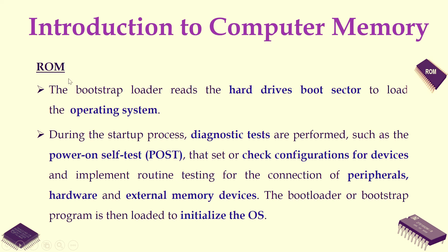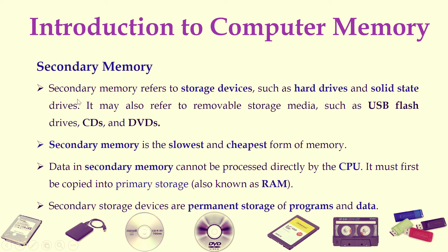Next, moving on to secondary memory. Secondary memory refers to storage devices such as hard drives and solid-state drives. If you want to store data permanently, we need secondary memory, such as hard drive, SSD, CD, DVD, or flash drive. Secondary memory is the lowest and cheapest form of memory — it is very large in size but speed is very slow. The data in secondary memory cannot be processed directly by the CPU; it must first be copied into primary storage, i.e., RAM. There is a huge amount of information in secondary memory, and what you need right now is stored into RAM and executed by the CPU.